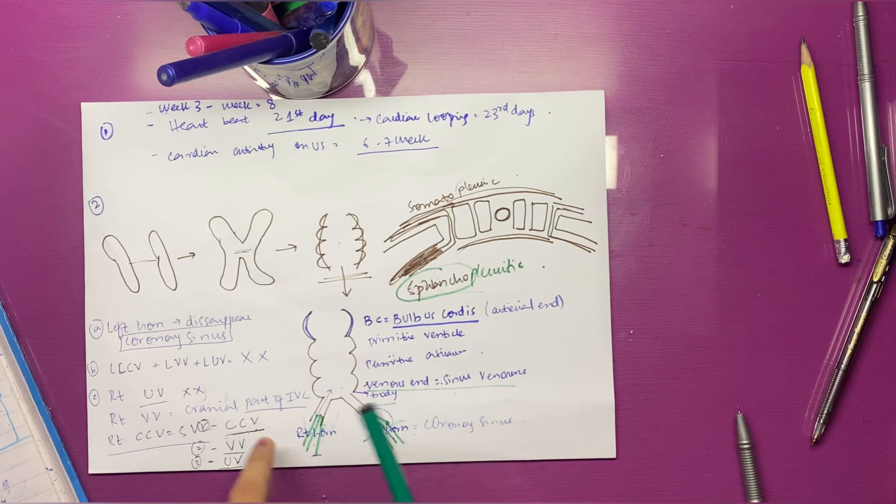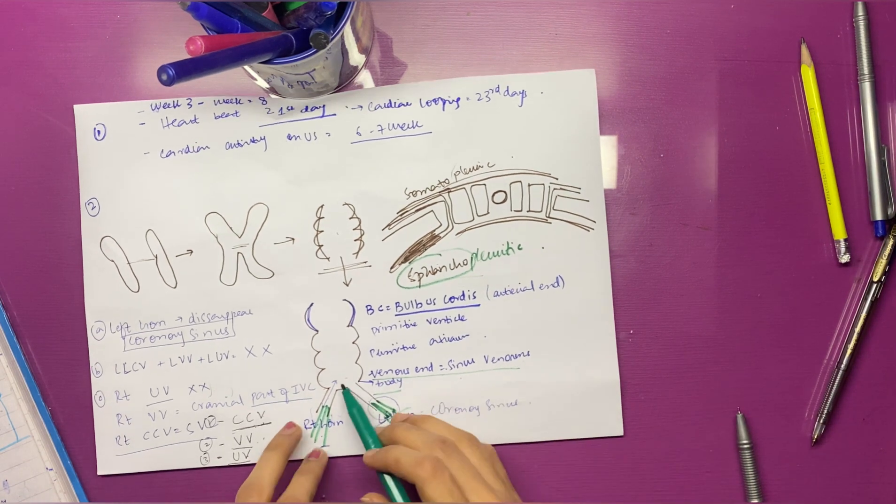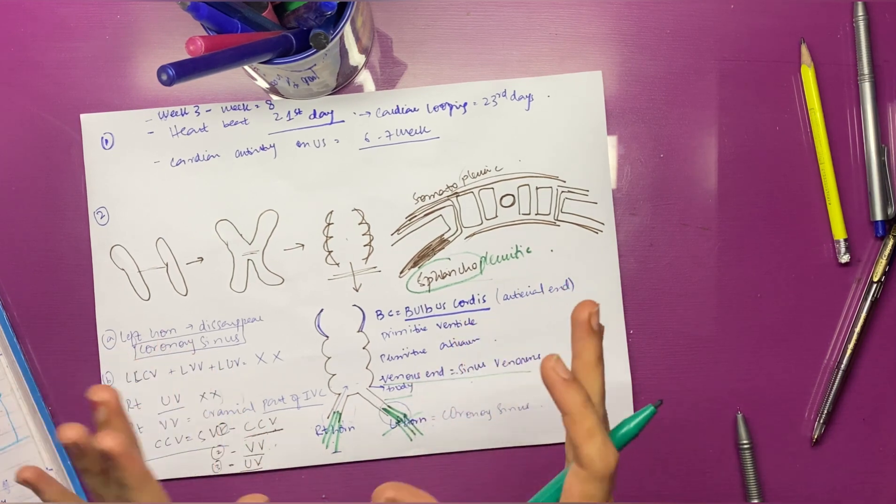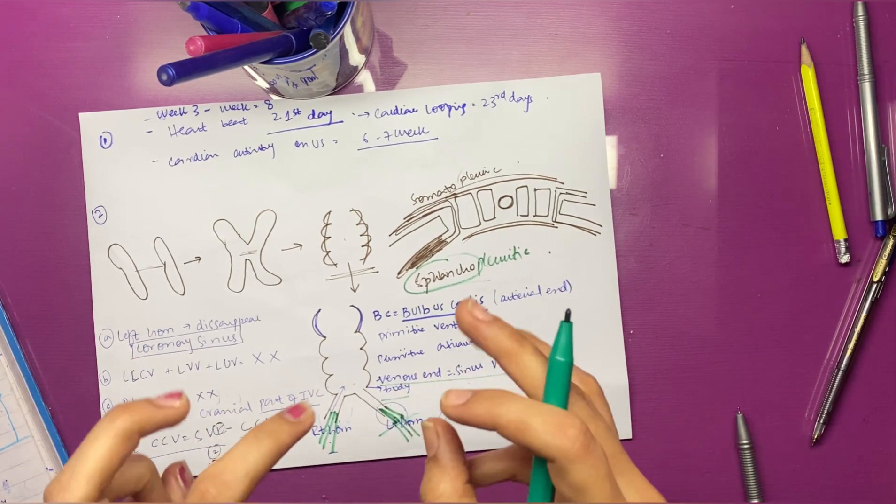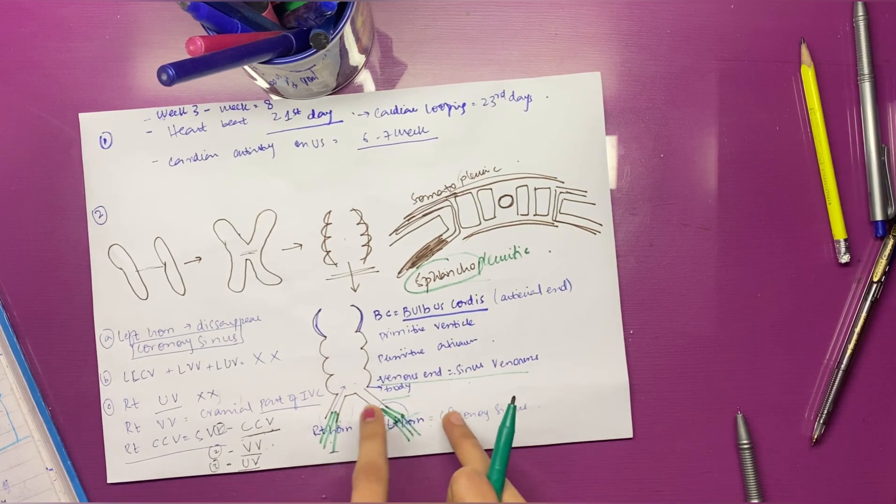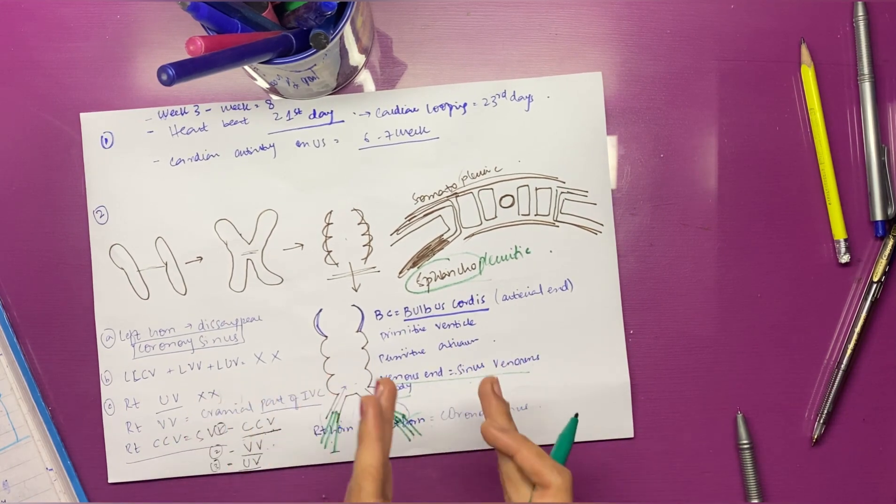So for example, in the initial video, just a reminder that we have four vesicles. The sinus venosus, also known as sinus venosis, has three parts: the first part is the body, and the other two parts are the right horn and left horn. Both horns receive three sets of veins from each side.